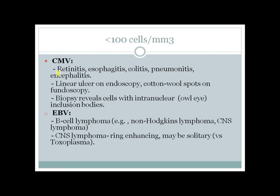Other infections in severely immunocompromised patients include CMV, which can lead to retinitis — very important — and can also cause inflammation of the esophagus, colon, or lung, and in severe cases encephalitis. Endoscopy in CMV esophagitis shows a linear ulcer. Retinitis shows cotton-wool spots on fundoscopy. Biopsy shows intranuclear owl-eye inclusion bodies. Epstein-Barr virus infection can lead to B-cell lymphoma, especially non-Hodgkin type, which can involve the CNS and appear as a ring-enhancing lesion on MRI — most likely solitary, unlike toxoplasma which is usually multiple.